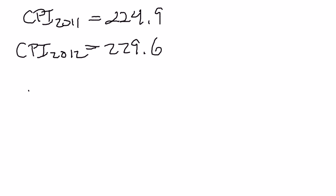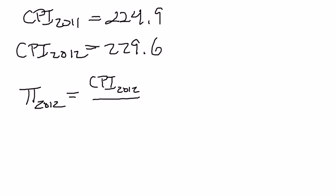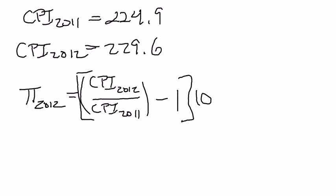Going back to one of our earlier formulas, we can say that the inflation rate in 2012 is going to be: the ending price level — and since our price level is the CPI, I'll write CPI rather than P — divided by the beginning price level, which is CPI in 2011, minus 1, times 100. The reason why we multiply by 100 is really just convention. It's to turn an inflation rate of 1% from 0.01 into just 1, or an inflation rate of 10% from 0.1 to 10, or 5% from 0.05 to 5. People think in whole numbers more easily than decimals, so it's convenient to multiply by 100.